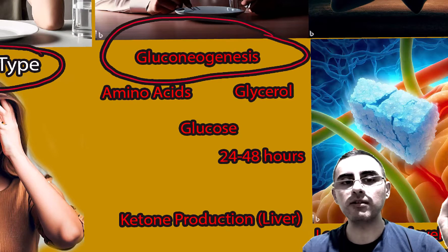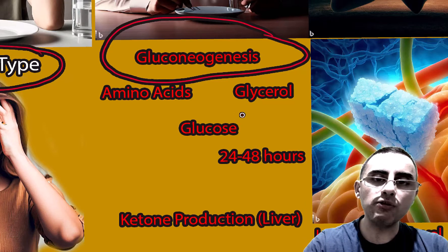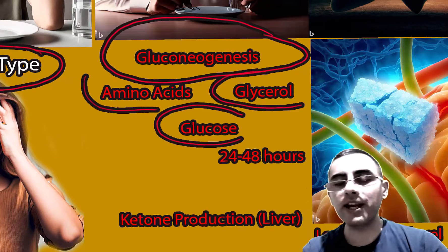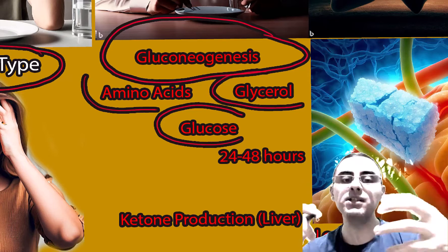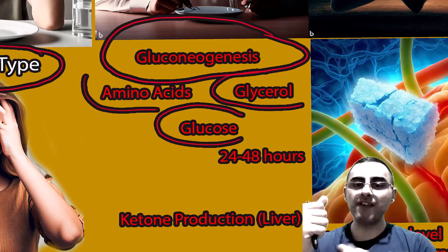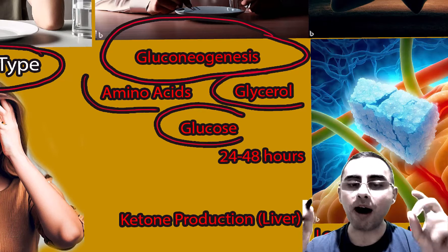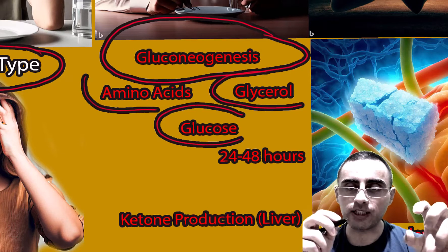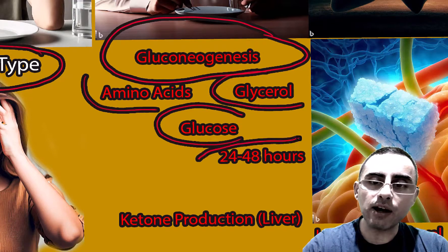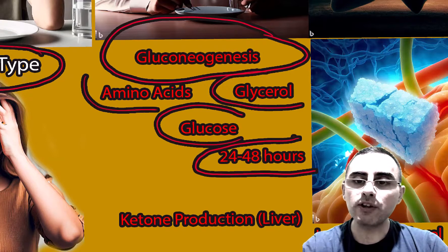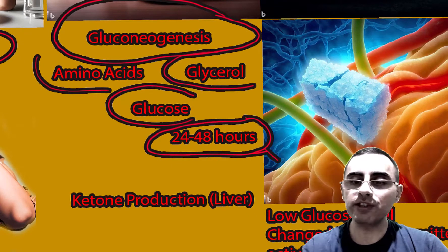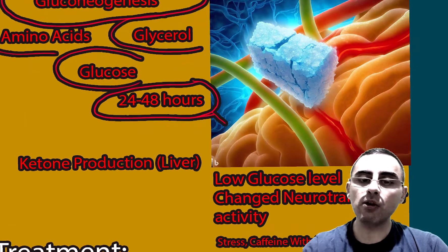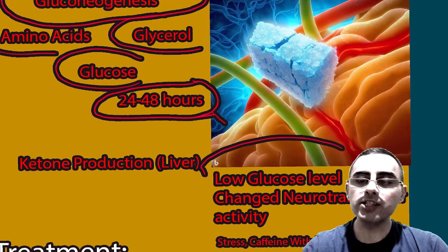During fasting, gluconeogenesis becomes active. Gluconeogenesis means our liver produces glucose from amino acids and glycerol — that is, from non-carbohydrate sources such as proteins from our muscles and fats. This process lasts around 24 to 48 hours, but it is not as stable as getting energy from eating, which is why low glucose levels cause headache.